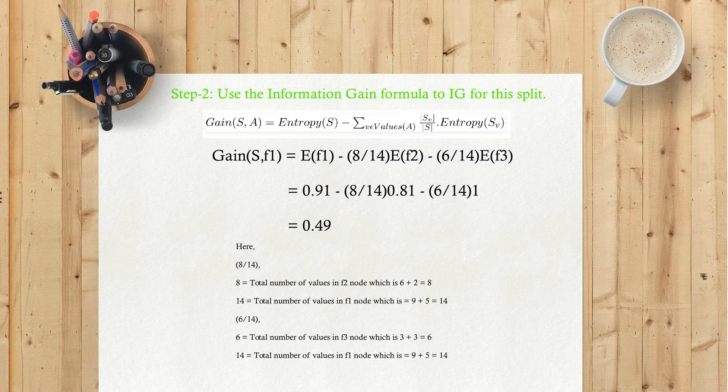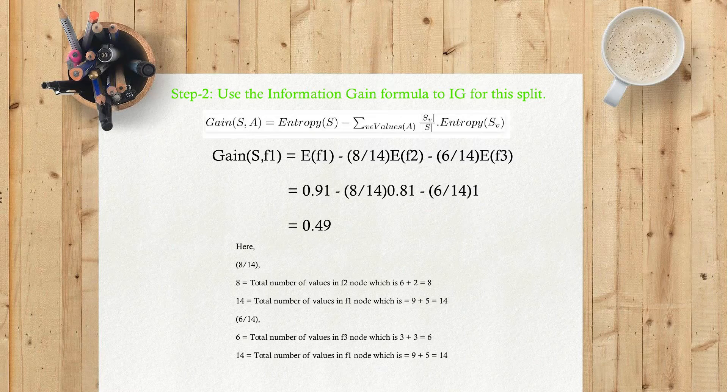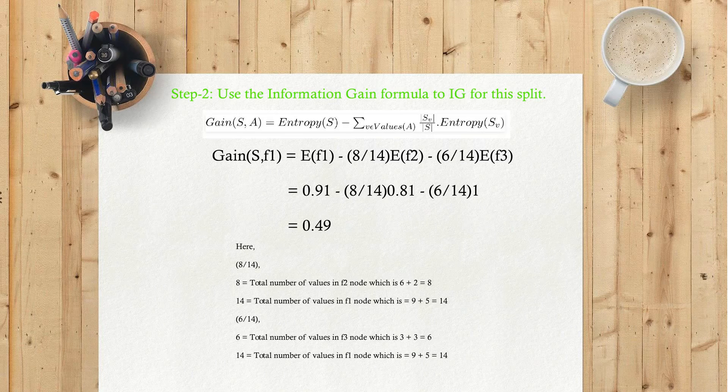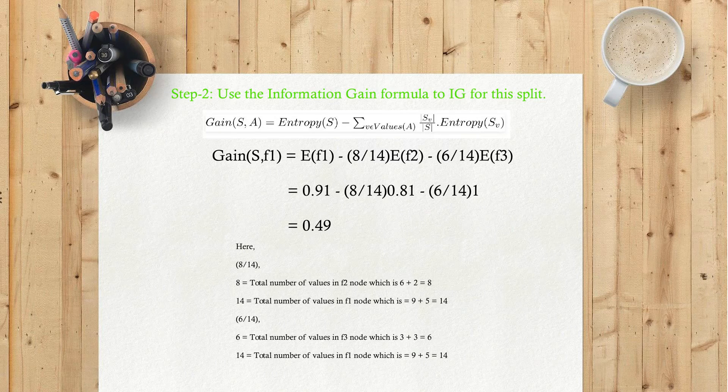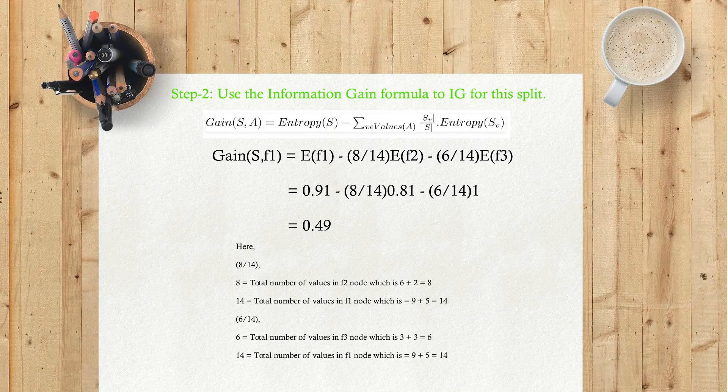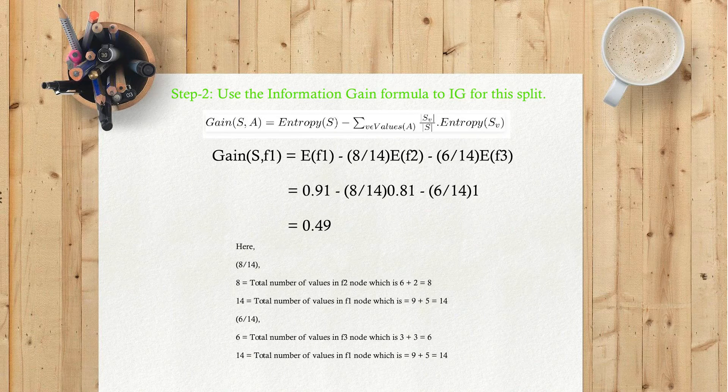Here, 8/14 where 8 equals total number of values in F2 node (6 + 2 = 8), and 14 equals total number of values in F1 node (9 + 5 = 14). 6/14 where 6 equals total number of values in F3 node (3 + 3 = 6), and 14 equals total number of values in F1 node (9 + 5 = 14).